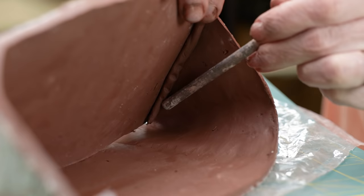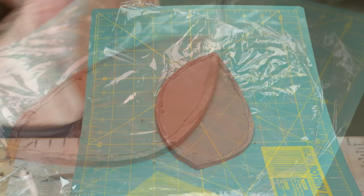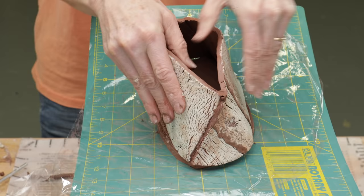Next I centered the bottom onto the mat. I scored and slipped it. Now I was able to place the top pieces onto the bottom and attach it all together making sure to put a rolled coil into the bottom edge seam.